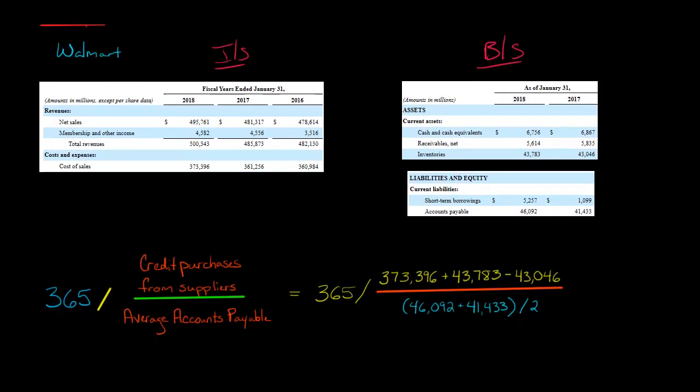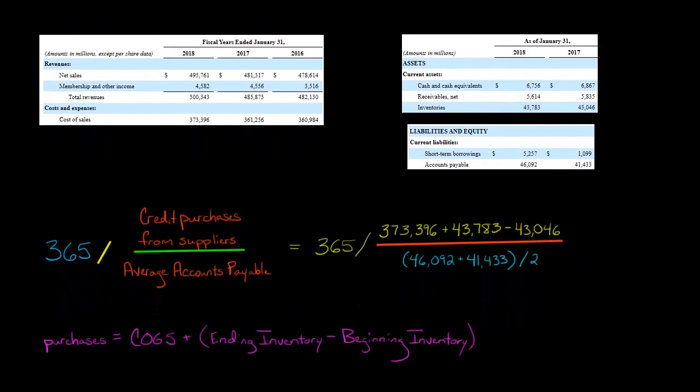We're going to use that when we're calculating the amount of credit purchases from suppliers. Because again, we're going to use this formula here. And so that cost of goods sold of $373.396, we're just going to put that in the numerator. And it's not going to be the only thing, because again, we're going to have to add the ending inventory and then subtract the beginning inventory.